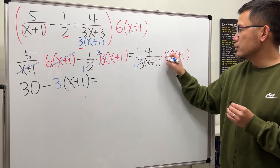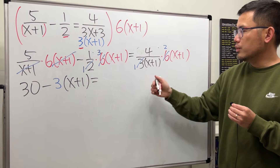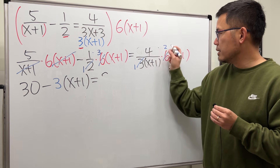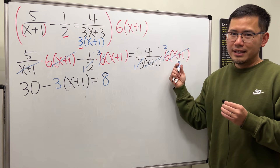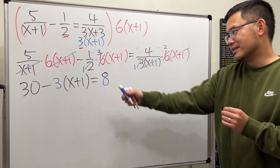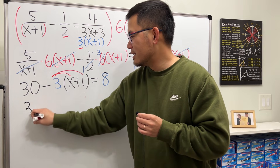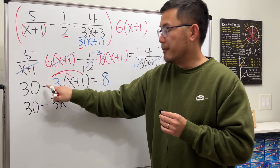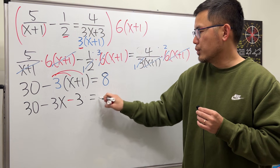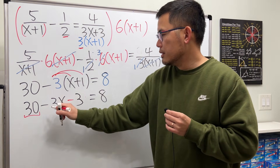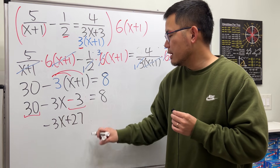Here we see that three goes into three once and three goes into six twice, so we multiply: four times two gives us eight. And x plus one and x plus one cancel — this is where I made the mistake in the previous video. Now let's finish this: go ahead and distribute the negative three into the parentheses. We have 30 minus three times x — negative three times one gives negative three — and that's equal to eight. So we have negative 3x plus 27 equals 8.